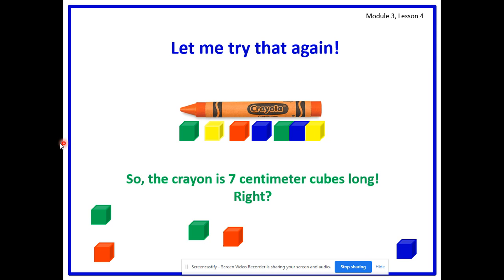The crayon isn't broken with a space in the middle, so the centimeter cubes have to be all connected without overlaps or gaps. What is our next rule? They should have no gaps. Let me try that one more time — count with me. How long is the crayon in centimeter cubes? Remember to say the unit — nine centimeter cubes long.